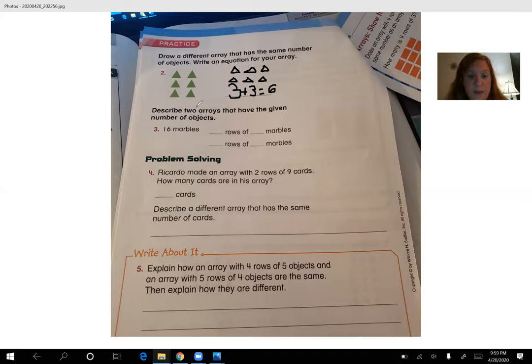Down here, describe two arrays that have the given number of objects. So if you have 16 marbles, you'll have to tell two different ways that you could make it. Blank rows of blank marbles and a different way. Problem solving. That looks like two rows of nine. That doesn't look too hard. Explain how an array with four rows of five objects and one with five rows of four objects are the same. Remember, I'll give you a hint. They always have the same answer. The only thing that's different is how you arrange them. So hopefully that will help you when you're answering.